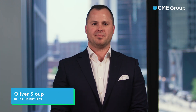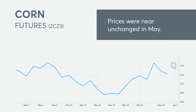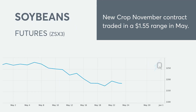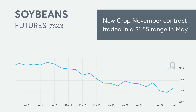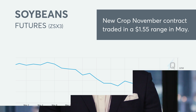What's behind the uptick in grain market volatility? During the month of May, grain market volatility edged higher, with the new crop December corn futures trading in a nearly 50 cent range, and heading into the last trading day of the month, prices were near unchanged. On the soybean side, it was more one-sided, with the new crop November contract trading in a $1.55 range.